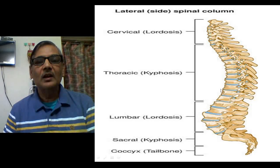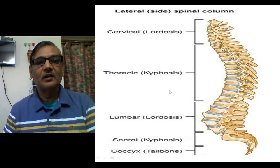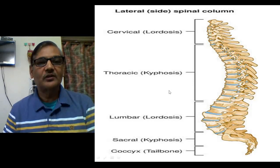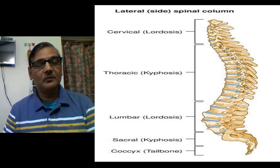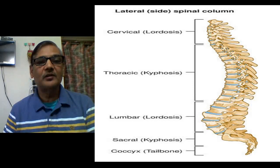So these are three examples for serial homology. To summarize: serial homology means those structures which are arranged serially are homologous structures. They may look different in their morphology, and since they look different in their morphology they would be used for performing different functions — but their origin pattern will always be the same.